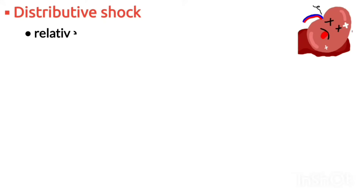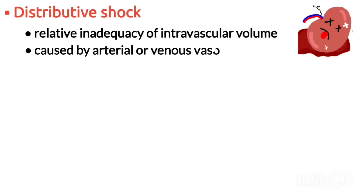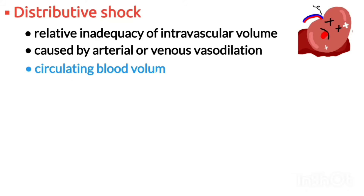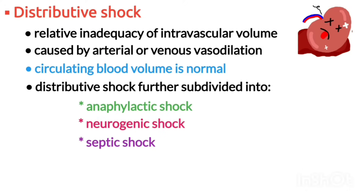Distributive shock results from a relative inadequacy of intravascular volume caused by arterial or venous vasodilation. In distributive shock, circulating blood volume is normal. It is further subdivided into anaphylactic shock, neurogenic shock, and septic shock.